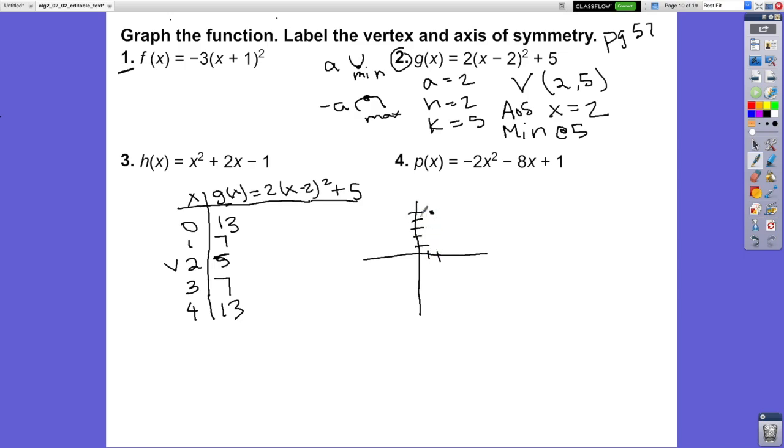Then (1, 7) goes up here, (3, 7) goes here, and (0, 13) is way up here. You can see this is a very thin parabola.